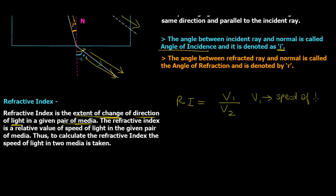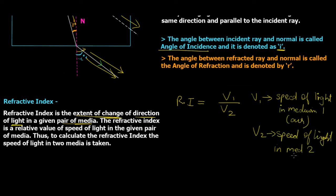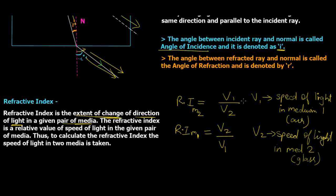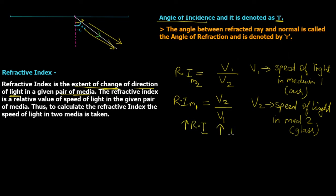So v1 is speed of light in air and v2 is speed of light in glass, giving the refractive index of glass with respect to air. Similarly, the refractive index of air with respect to glass is v2 upon v1. These values are always constant for certain pairs — for example, air and oil, glass and water, air and water. Also, higher the value of refractive index, higher the refraction, and lower the value, lower the refraction.